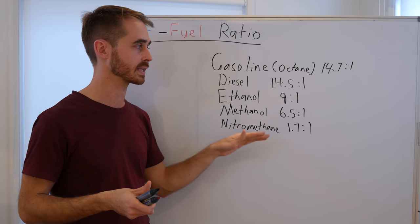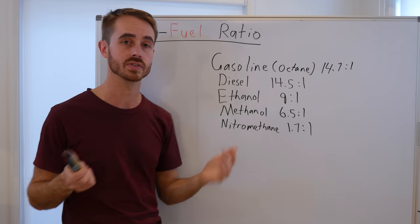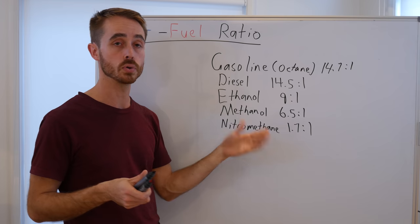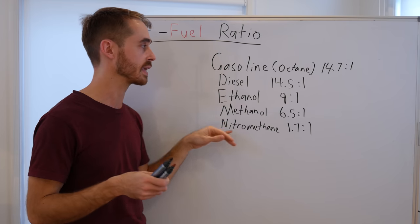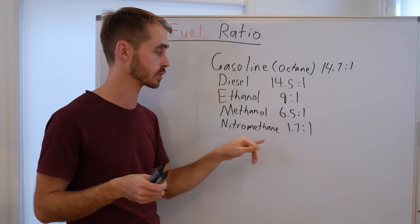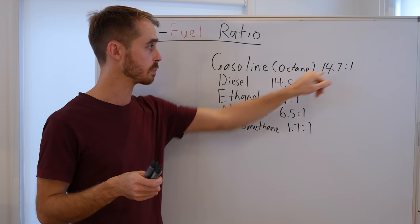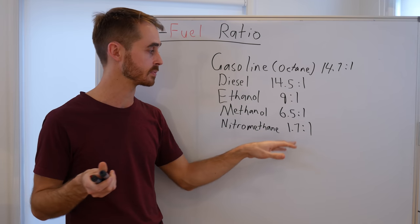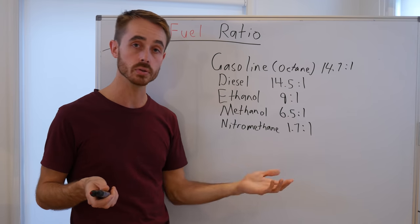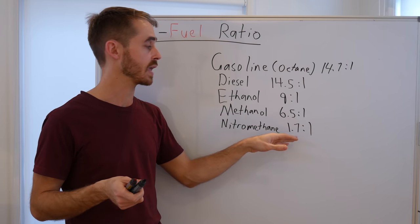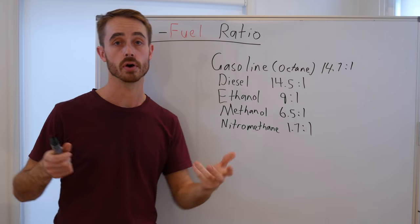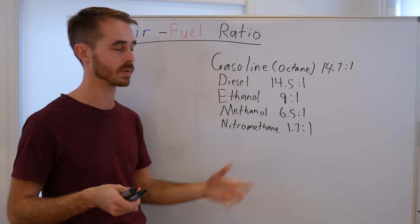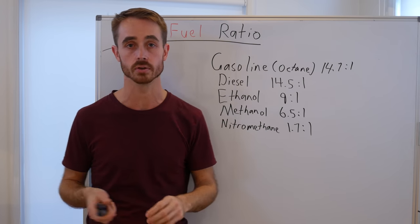With nitromethane, you can see the obvious benefits — if we have a fuel with similar energy density to octane but we're burning seven or eight times as much fuel, we're going to end up with significantly more energy per combustion event. That gives you a basic rundown of some air-fuel ratios.